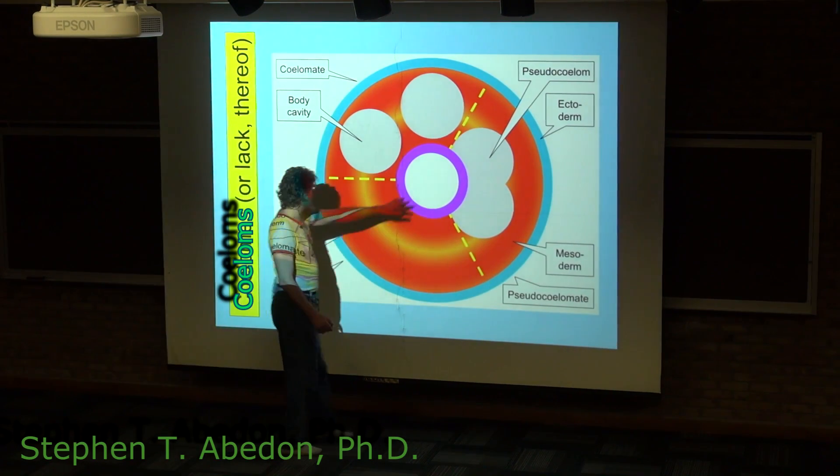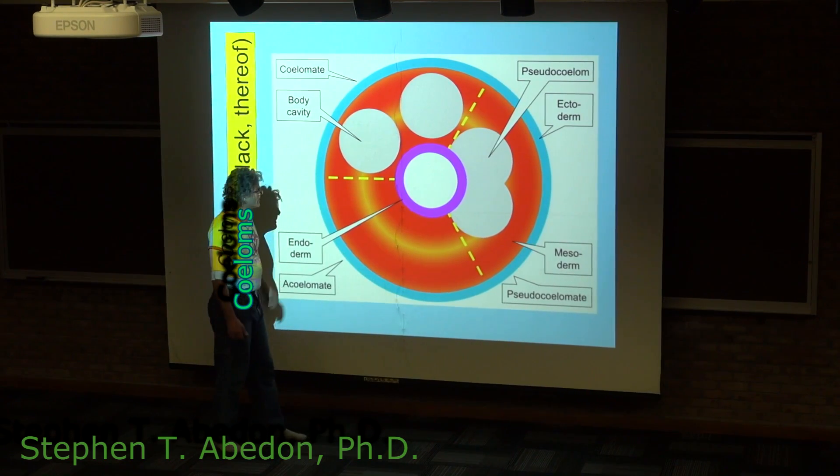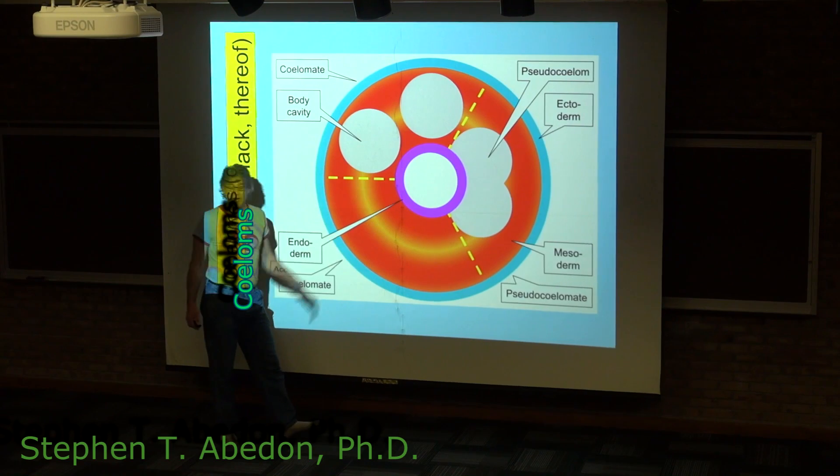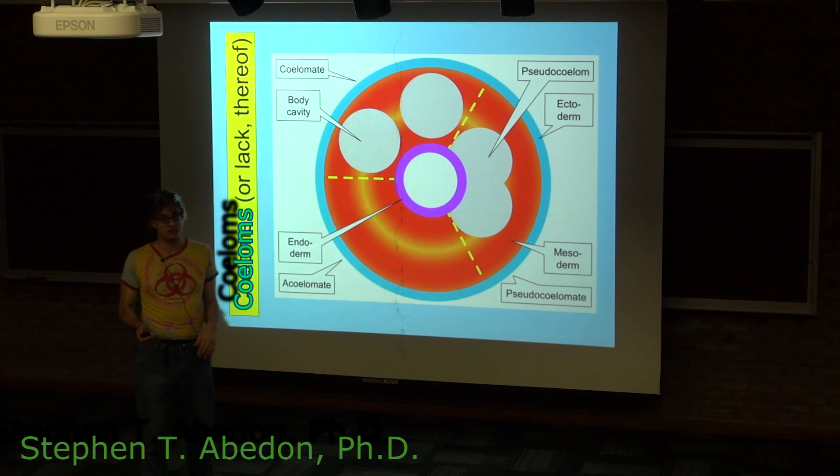The endoderm is lining the gut. This is the gut here, where the food is digested and absorbed. And then in between you have the mesodermal tissue. We're talking exclusively about triploblastic animals at this point.